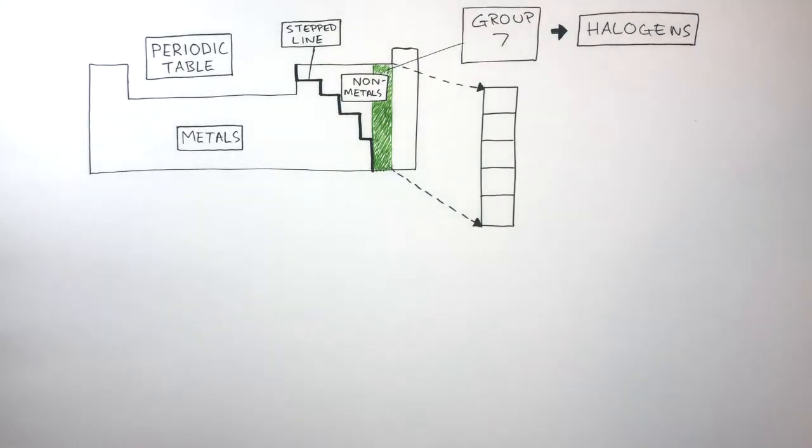The first halogen is fluorine, followed by chlorine, then bromine, followed by iodine, and then astatine.